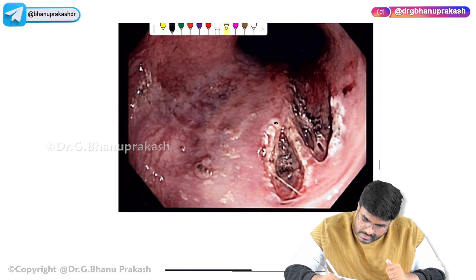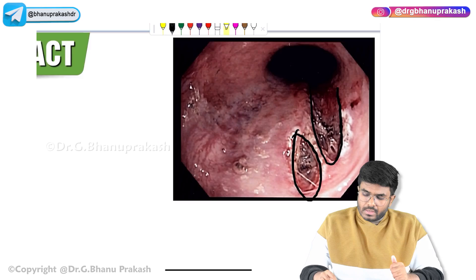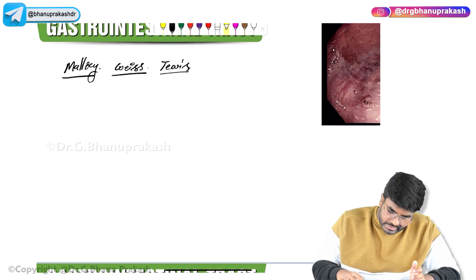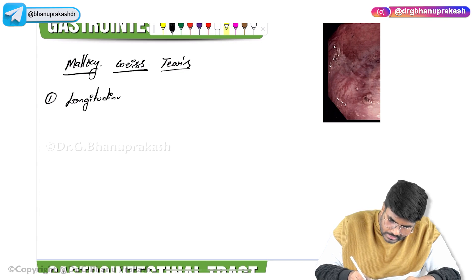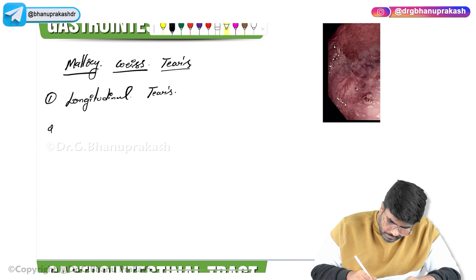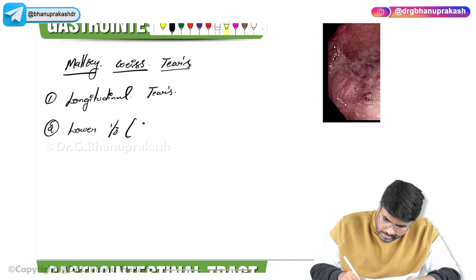You can clearly see these longitudinal lacerations happening in the lower part of the esophagus. Mallory-Weiss tears are longitudinal tears seen in the lower one-third of the esophagus, mainly at the gastroesophageal junction.